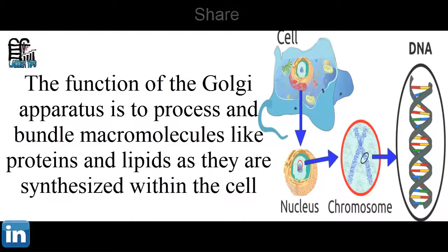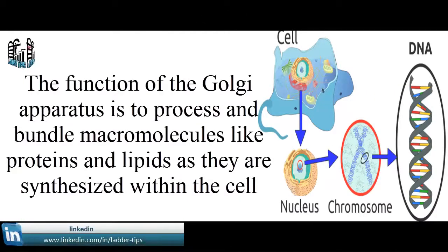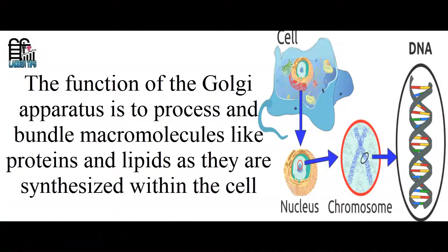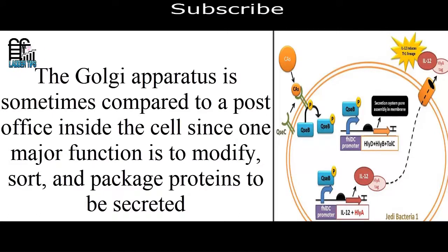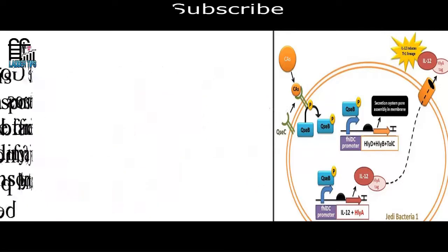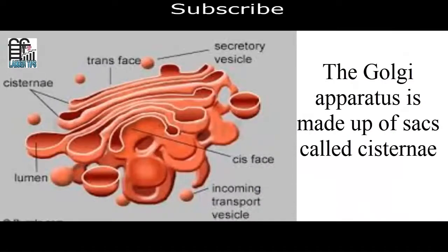The function of the Golgi Apparatus is to process and bundle macromolecules like proteins and lipids as they are synthesized within the cell. The Golgi Apparatus is sometimes compared to a post office inside the cell, since one major function is to modify, sort, and package proteins to be secreted. The Golgi Apparatus is made up of sacs called cisternae.